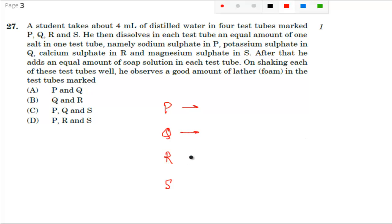Now he then dissolves in each test tube an equal amount of one salt. So apart from distilled water, you have one salt in each test tube. In P, you see sodium sulphate, so the formula for sodium sulphate is Na2SO4. I am just explaining, okay. You are not supposed to explain. Just you have to write the correct answer. So next one is potassium sulphate in Q, so it is K2SO4.